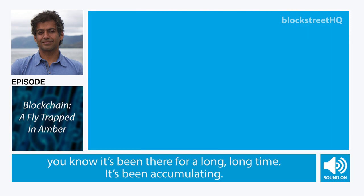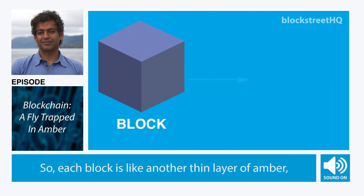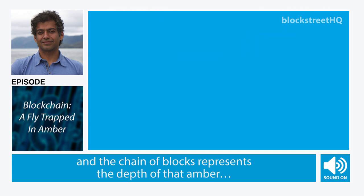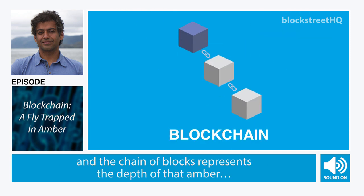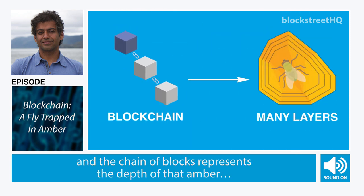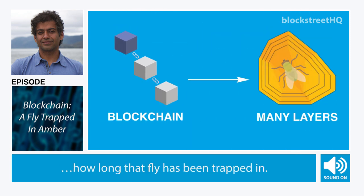It's been accumulating. So each block is like another thin layer of amber, and the chain of blocks represents the depth of that amber — how long that fly has been trapped in.